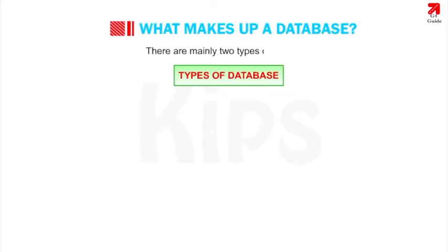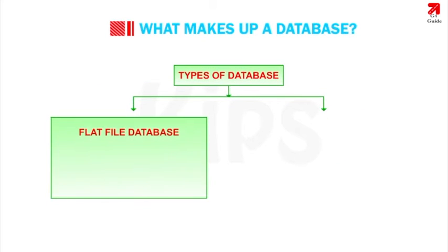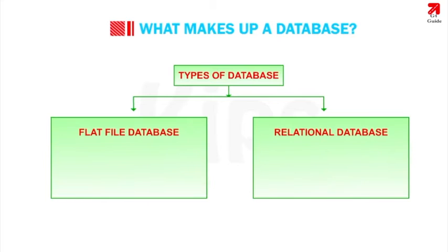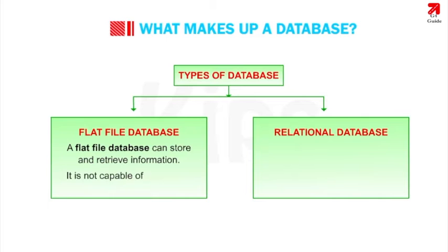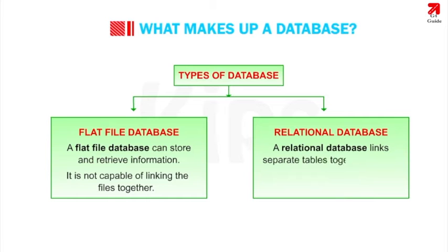There are mainly two types of database: flat file database and relational database. A flat file database can store and retrieve information but is not capable of linking files together. A relational database links separate tables together to get a common piece of information.